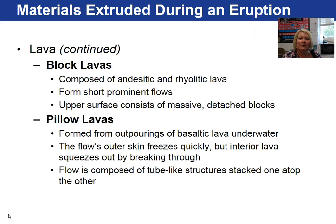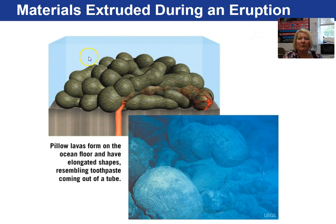Additional materials that extrude from a volcano include block lavas. They are associated with intermediate and felsic lavas rather than basaltic. They form short flows and have massive detached blocks. Pillow lavas are another type of material extruded during a volcanic eruption, and when we see pillow lavas, our interpretation is that they formed underwater. As the lava extrudes, the outside portion gets chilled and then the inside expands and breaks through, forming pillows.